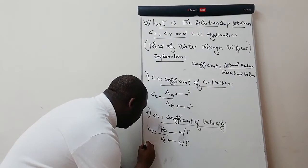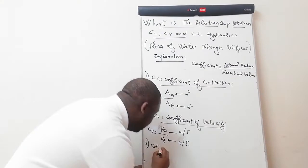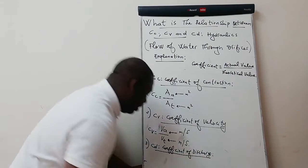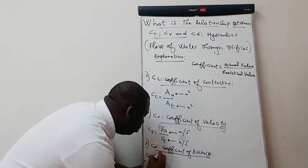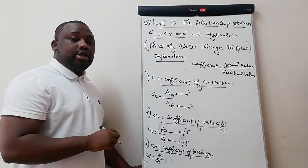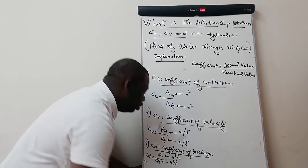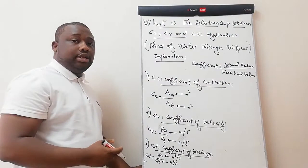Number three: CD, which is your coefficient of discharge. CD is equal to QA over QT — QA is your actual discharge in cubic meters per second, and QT is your theoretical discharge, also in cubic meters per second. The units simplify, so CD won't have a unit either.